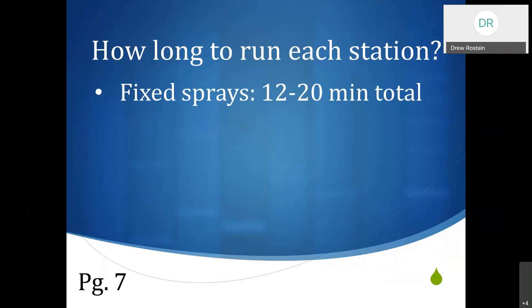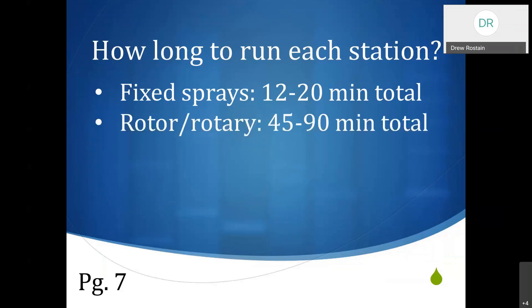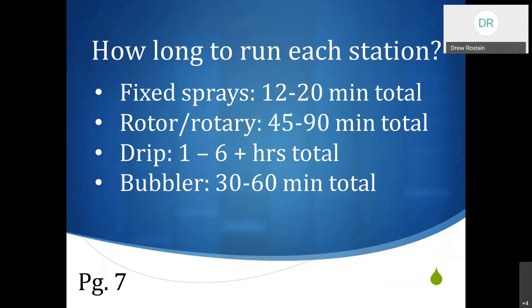Here are some general rules of thumb to get you started. Testing your sprinklers is the best way, but if you need to start somewhere, you're going to get typically in the range of 12 to 20 minutes for fixed sprays, aiming for that 6 to 12 inch watering depth on your lawn. For rotors or rotary, you're going to be in a higher range. For drip irrigation that is pressure compensating, you can see one hour or more — sometimes even up to six hours. So if you're only watering one gallon per hour at each plant, six hours is actually not bad and might not even be enough for really large plants. Bubblers are typically on the lower end and usually stamped with a flow rate in gallons per minute.